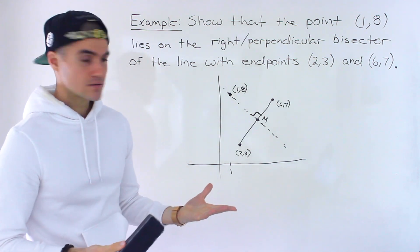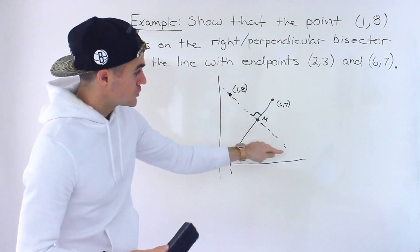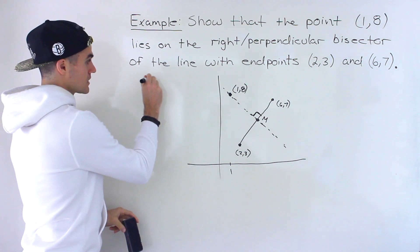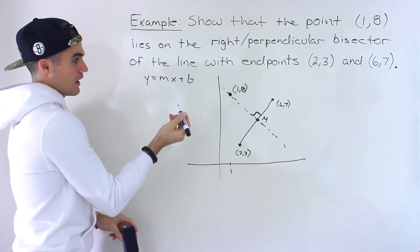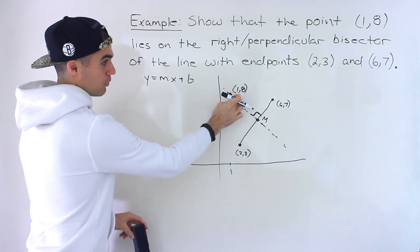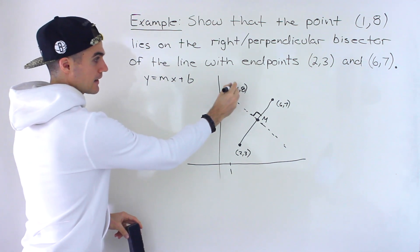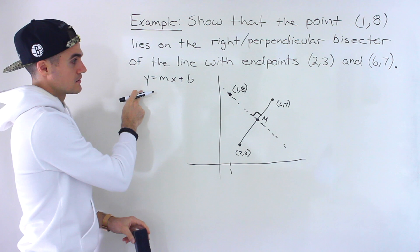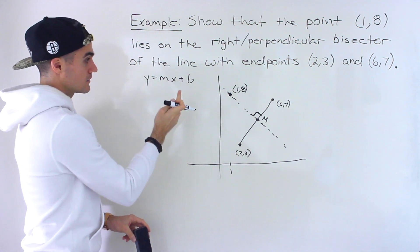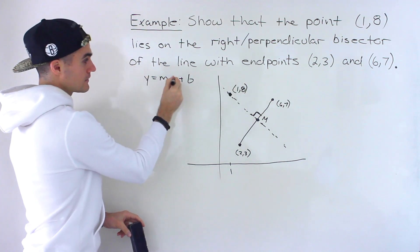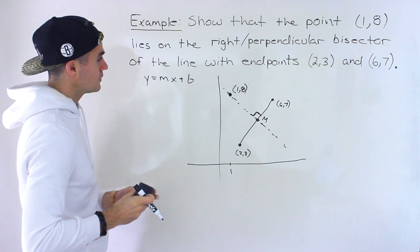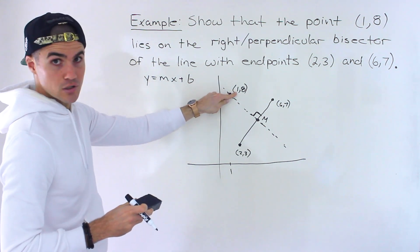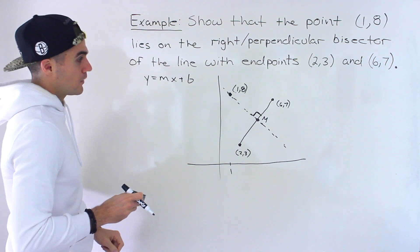The first way to do this is to actually find the equation of the right or perpendicular bisector, which we've done in videos before. That gives us a line in y equals mx plus b form. Then to confirm that the point (1, 8) lies on this line, we plug in an x value of 1 and make sure we get a y value of 8 — or plug in y equals 8 and solve for x. Usually you plug in the x value and confirm the corresponding y value.